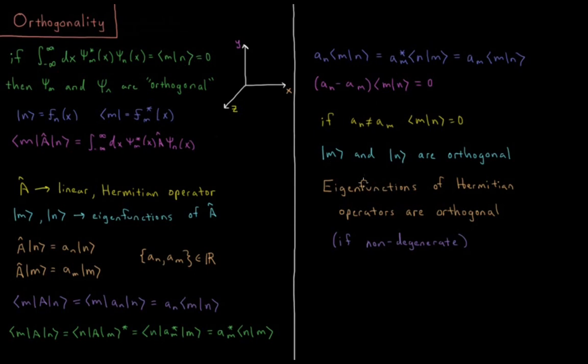So what we've shown here is that the eigenfunctions of Hermitian operators are orthogonal if they are non-degenerate. So for the Hamiltonian operator, the Hamiltonian operator is Hermitian. It is linear.